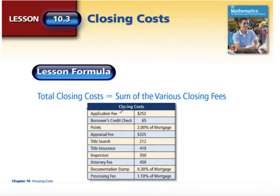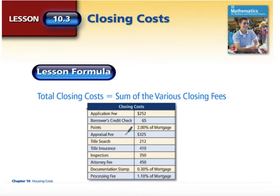Typically, you're going to have some kind of application fee. They're also going to have to do a credit check on your credit background, so you're going to have to pay for that credit check. There may be points associated — this is the direct cost of taking out a mortgage and what you pay the bank directly. There could also be an appraisal fee. If you're buying a home that's already established, you might have to have that home appraised, and someone may need to come out and look over the property to make sure everything is intact.